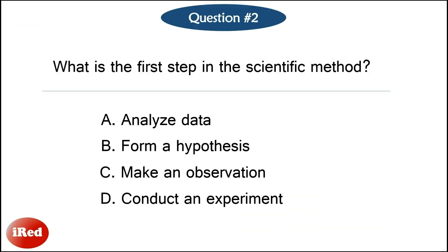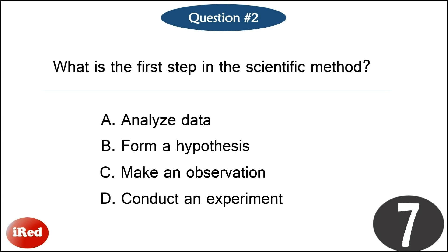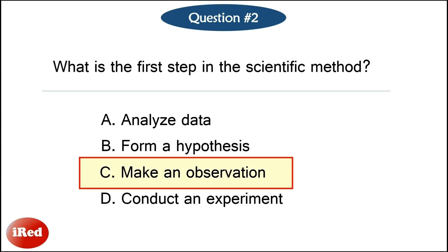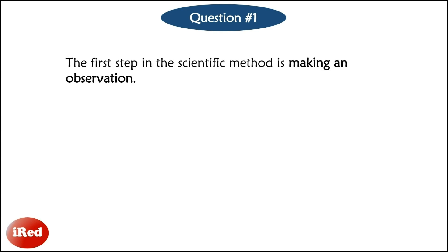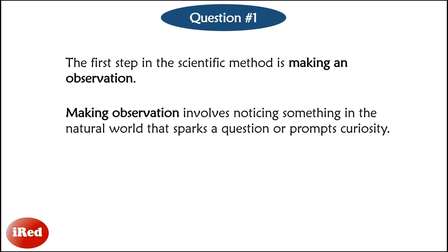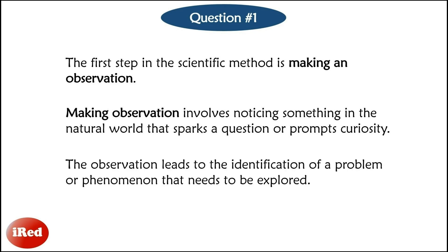Question number 2: What is the first step in the scientific method? The correct answer is letter C: make an observation. The first step in the scientific method is making an observation, which involves noticing something in the natural world that sparks a question or prompts curiosity. The observation leads to the identification of a problem or phenomenon that needs to be explored.